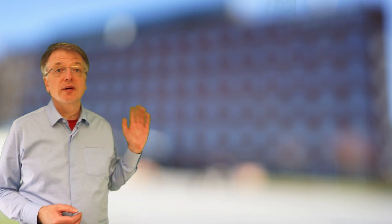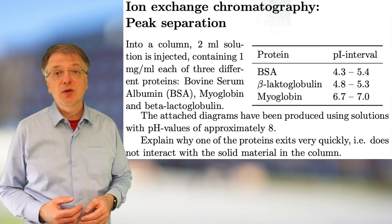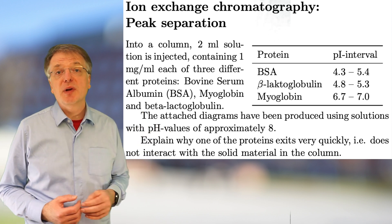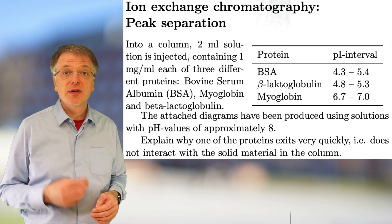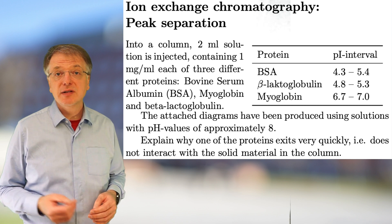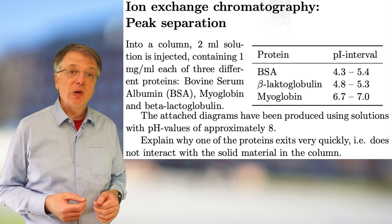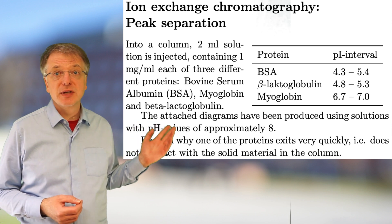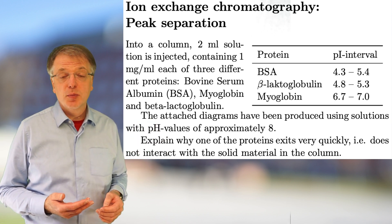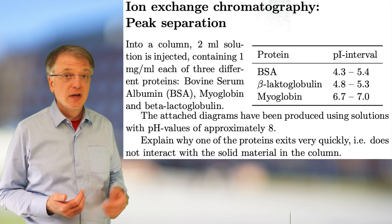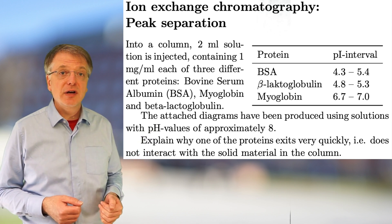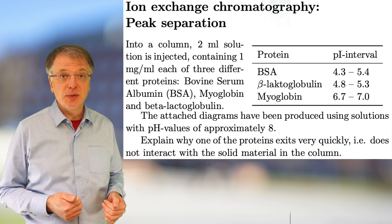So into a column a two millimeter solution is injected containing one milligram per milliliter each of three different proteins: bovine serum albumin BSA, myoglobin and beta-lactoglobulin. The PI intervals for these proteins are BSA 4.3 to 5.4, beta-lactoglobulin 4.8 to 5.3 and finally myoglobin 6.7 to 7.0.